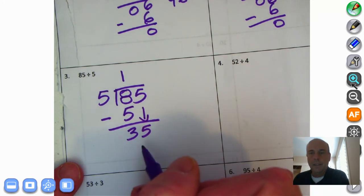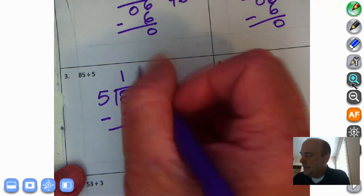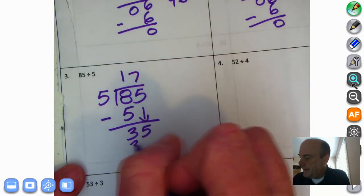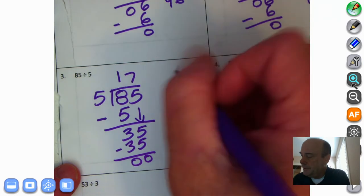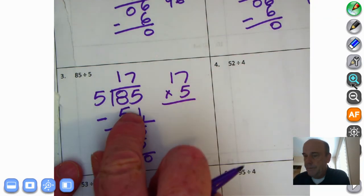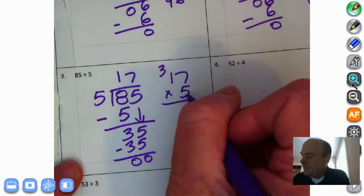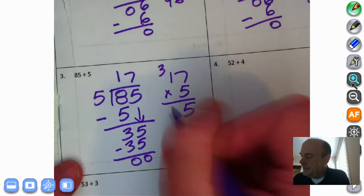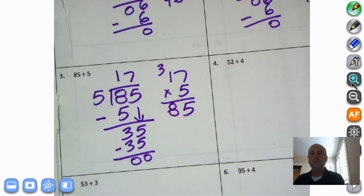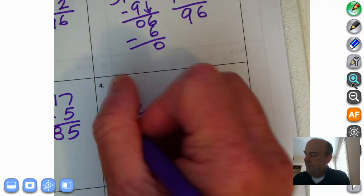We've been encountering this a lot. 5 times what is 35? 5, 10, 15, 20, 25, 30, 35. Stop. 5 times 7 is 35. No remainder. Let's check using multiplication. 17 times 5. This should equal 85. 7 times 5 is 35. 10 times 5 is 50. Plus 60, 70, 80 is 85. And we are absolutely correct.